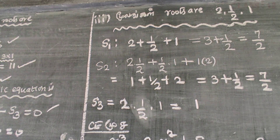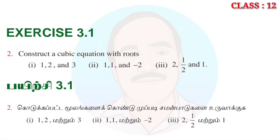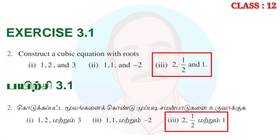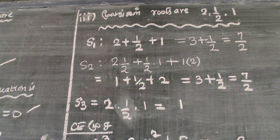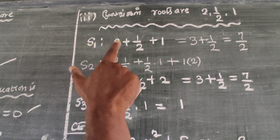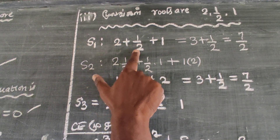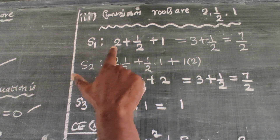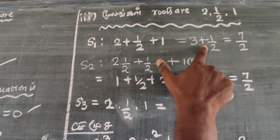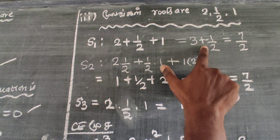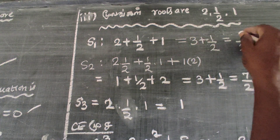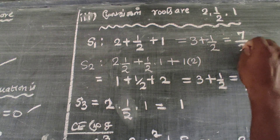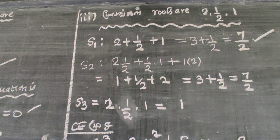Now we will see substitution 3. The roots are 2, 1 by 2, and 1. S1 is the sum of roots: 2 plus 1 half plus 1. That is 3 plus half, which is 6 plus 1 over 2, equal to 7 by 2. So S1 is equal to 7 by 2.